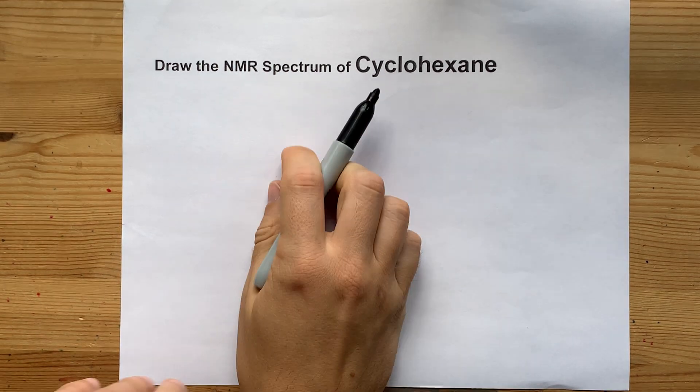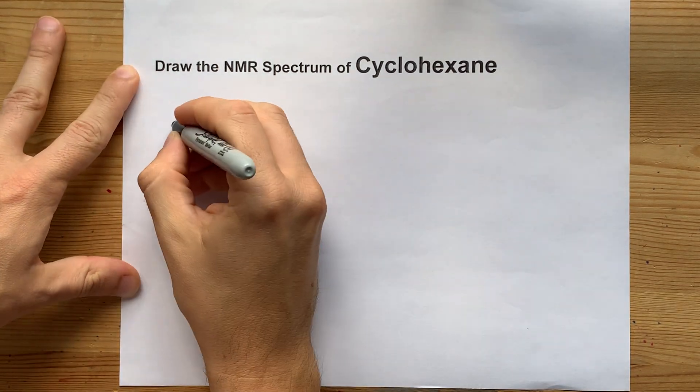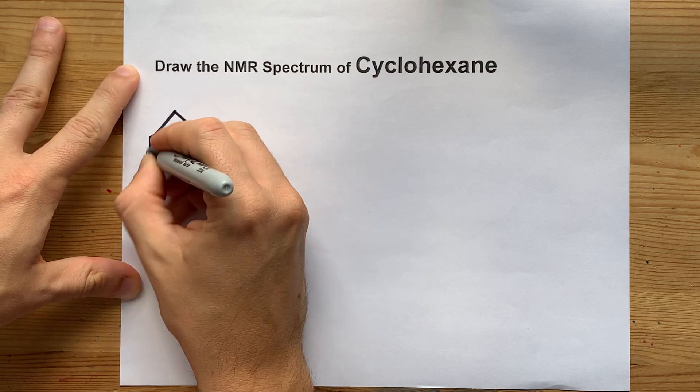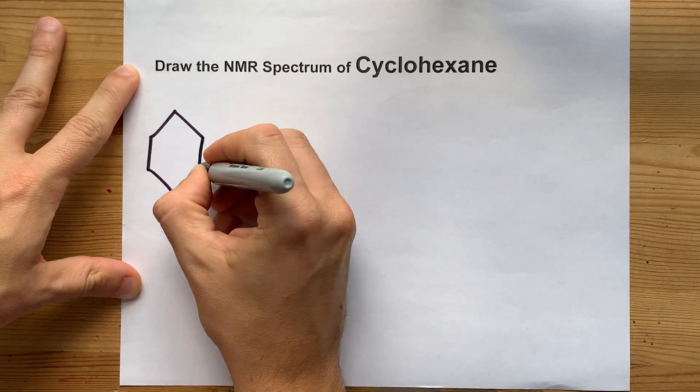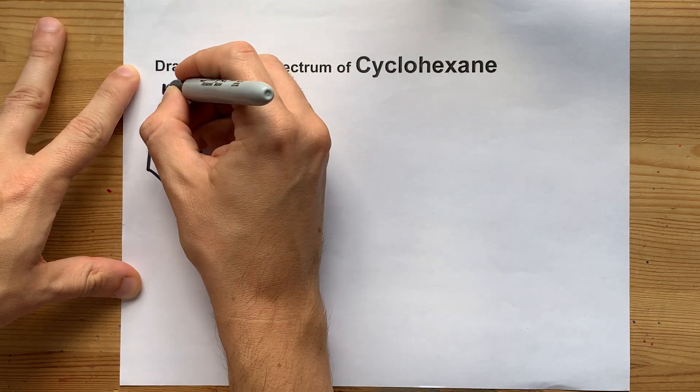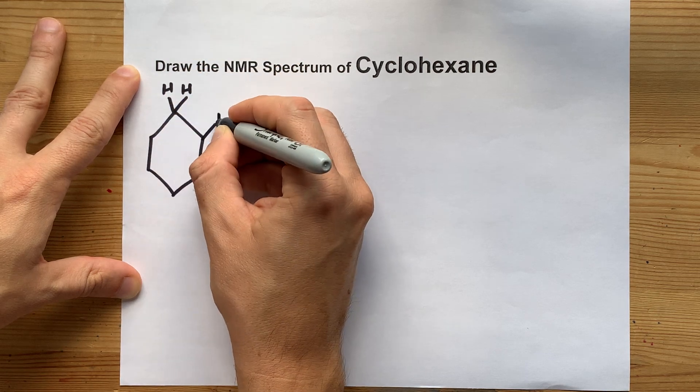To predict the NMR spectrum of a molecule, you'll need to figure out if all of the hydrogens or which hydrogens are equivalent to each other in terms of the environment in which they're found.